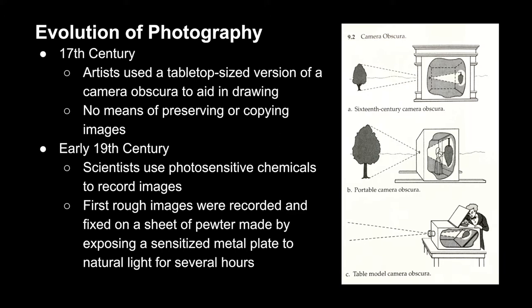In the early 19th century, scientists were able to coat certain surfaces with photosensitive chemicals in order to record these images. The first rough images were recorded and fixed onto a sheet of pewter, and the image was created by exposing sensitized metal plates to natural light for several hours.